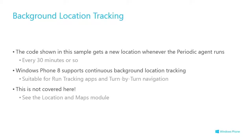Background location tracking: the agent runs roughly every 30 minutes, as long as there's battery and other conditions are met. So it's good for a rough fix — maybe not super accurate. You can get that for free. There's something better coming — continuous background location tracking — which we'll talk about tomorrow. That's going to be the good stuff.